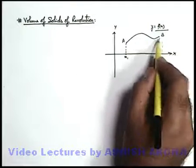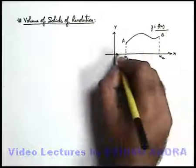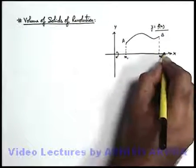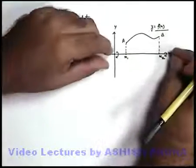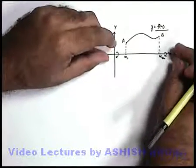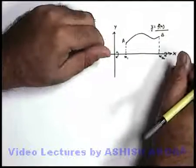Now, if the curve is rotated or revolved about the x-axis like this, we just keep this x-axis fixed and we rotate it or twist it by 360 degrees.